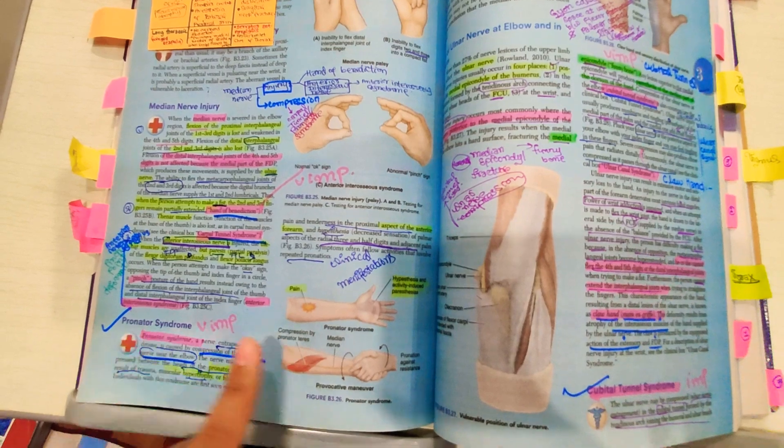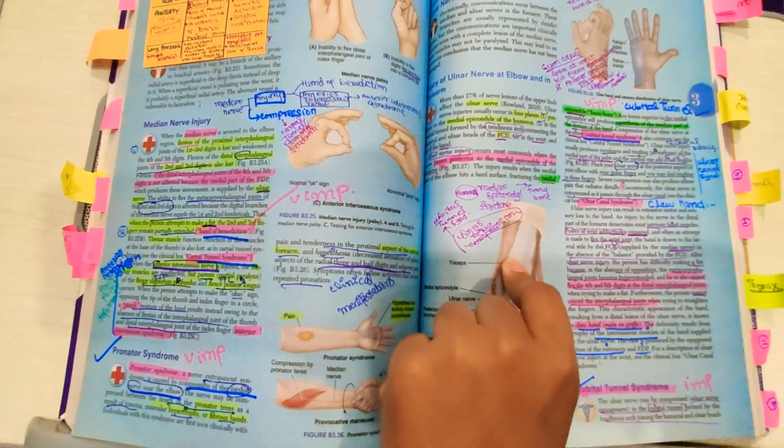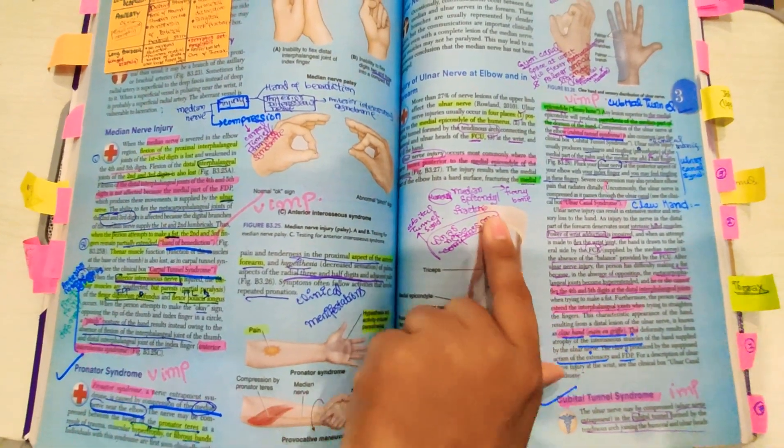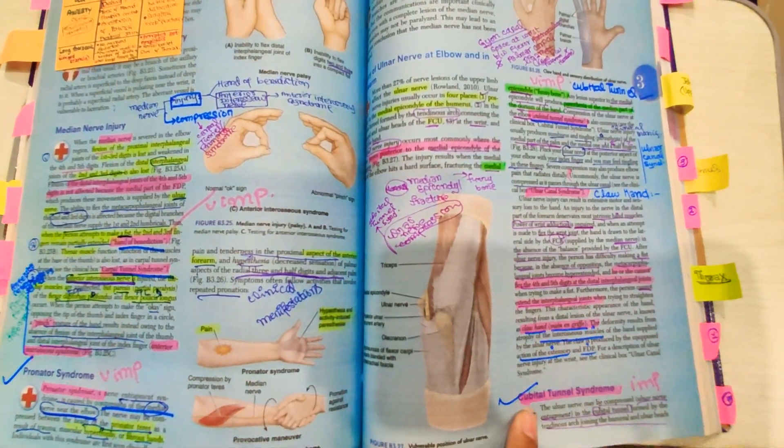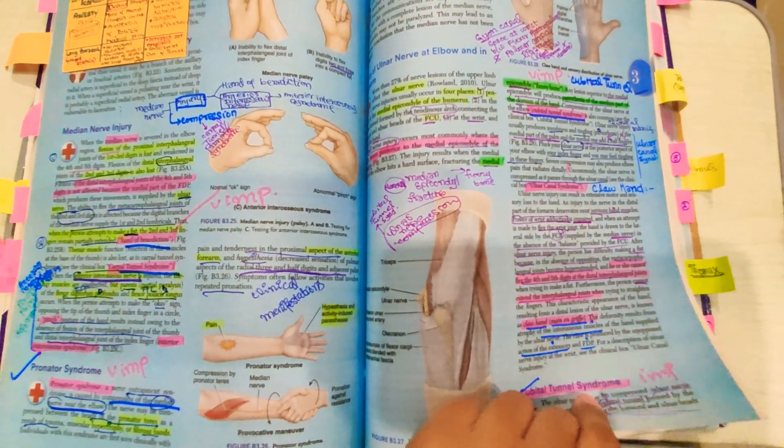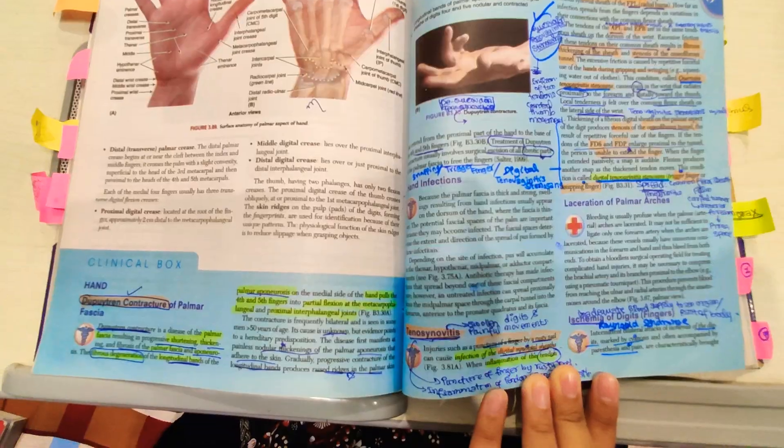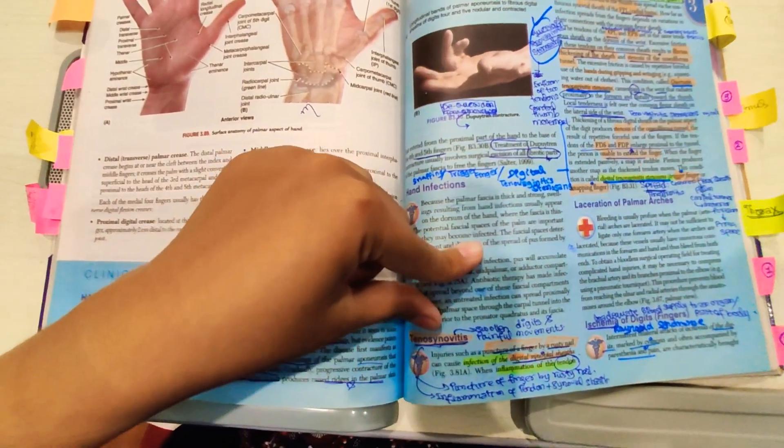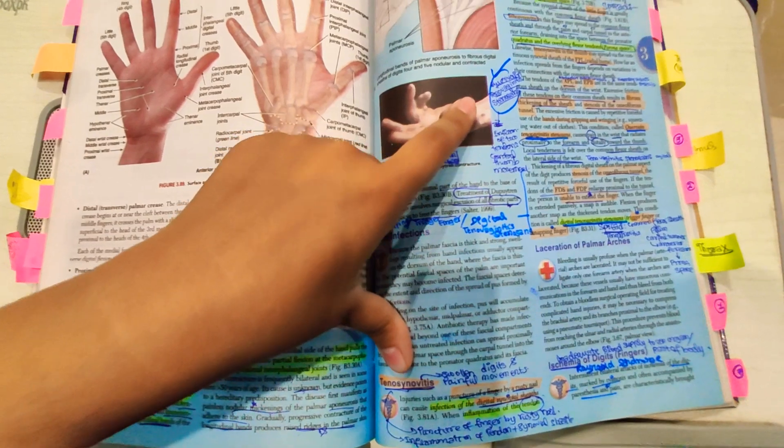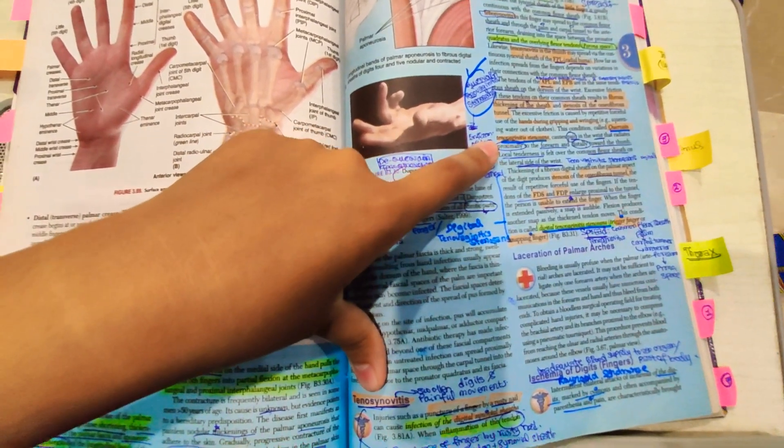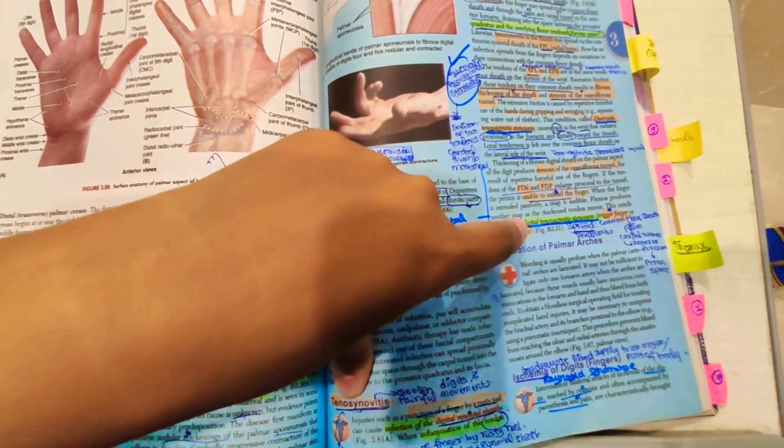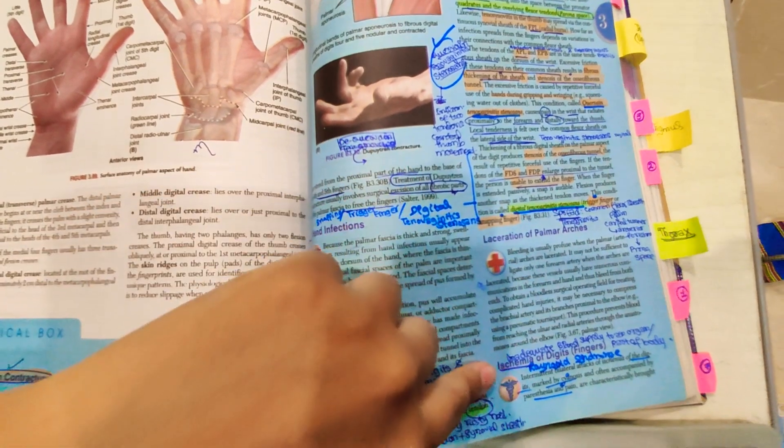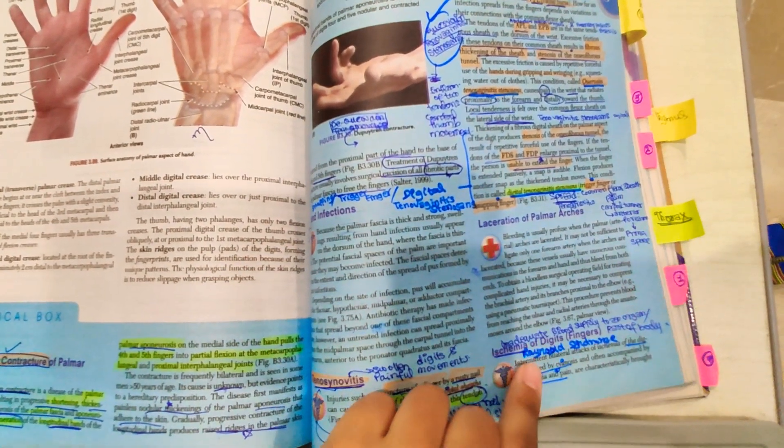And then you have to do median nerve injury, pronator syndrome and injury of ulnar nerve, and then cubital tunnel syndrome. Then you have to do Dupuytren's contracture and tenosynovitis - it's important - De Quervain's tenosynovitis and digital tenosynovitis.